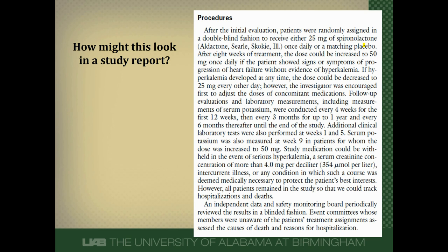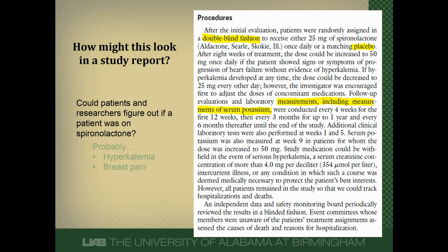How might blinding look in an actual study? Here's an excerpt from a study of spironolactone in patients with advanced heart failure. The researchers describe this as a double blind study but don't specify who is blinded, so we assume it means researchers and patients. They used a placebo to accomplish blinding. One consideration is that the study measured serum potassium — and since spironolactone raises potassium and can cause breast pain, researchers and patients may have been able to figure out their arm. However, the outcome assessors — including the data safety monitoring board and the event committee — were blinded.